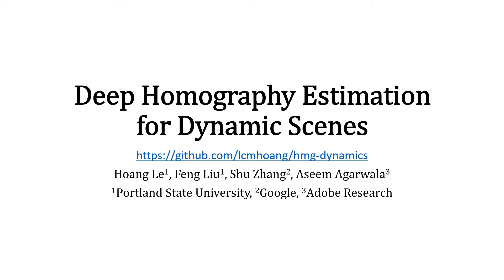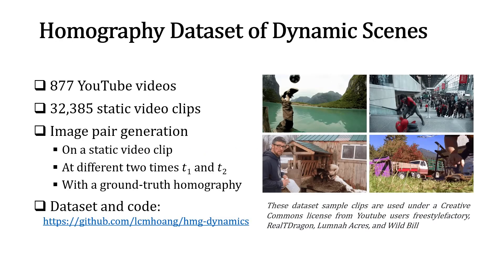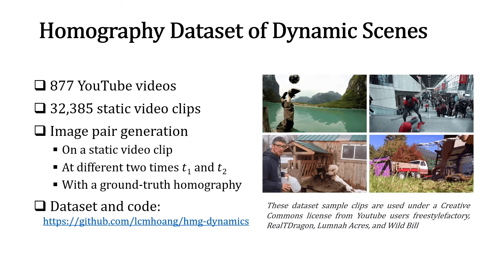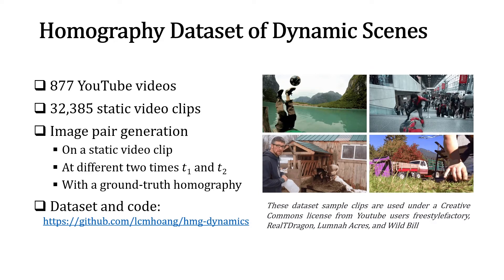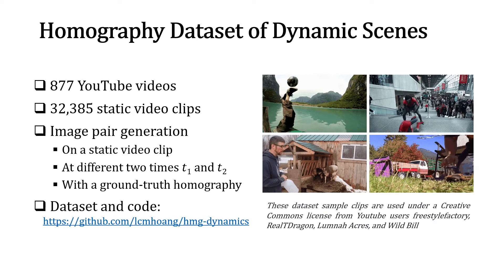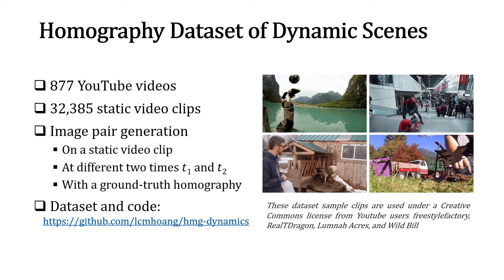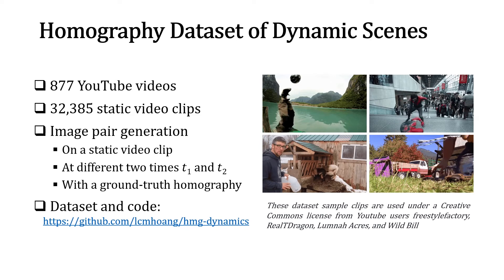This paper presents a deep learning-based method to predict homographies for images that capture dynamic scenes. We first collected a large video dataset with dynamic content consisting of 877 YouTube videos, from which we extracted more than 30,000 static video clips. We also developed a method to generate pairs of images of dynamic scenes with ground-truth homographies.